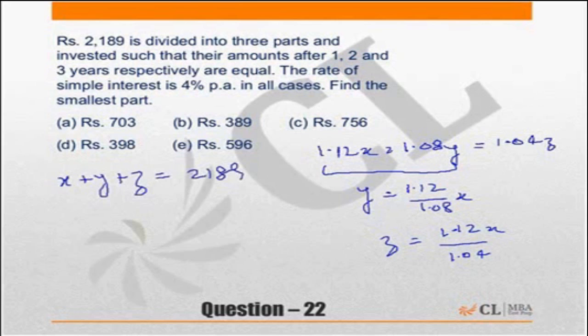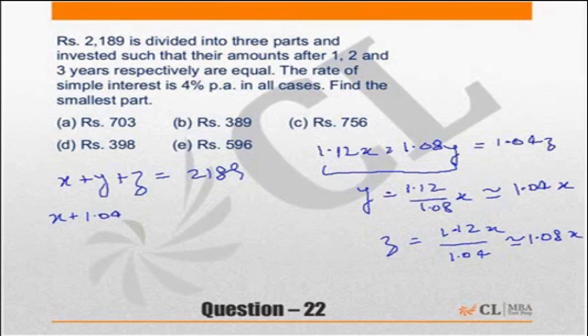So if I look at just these two, I can say y is equal to 1.12 upon 1.08 times x. Similarly I can say z is equal to 1.12x upon 1.04. And this you should substitute in x plus y plus z equal to 2,189. Now this I can assure you is not an easy calculation.